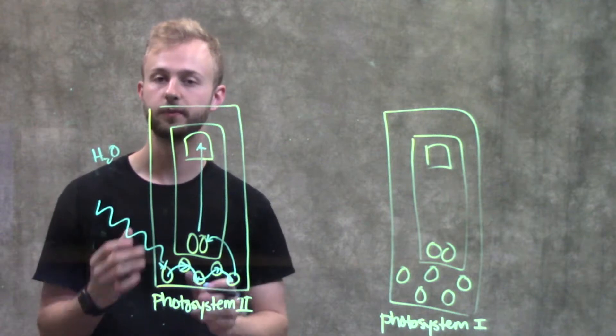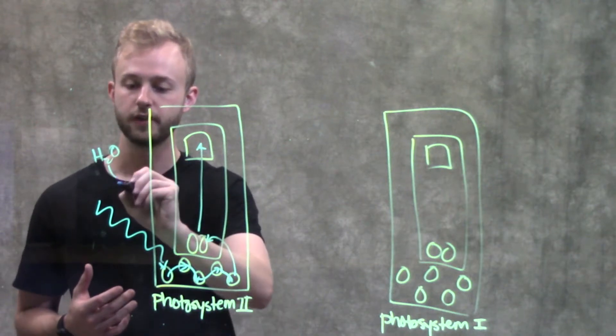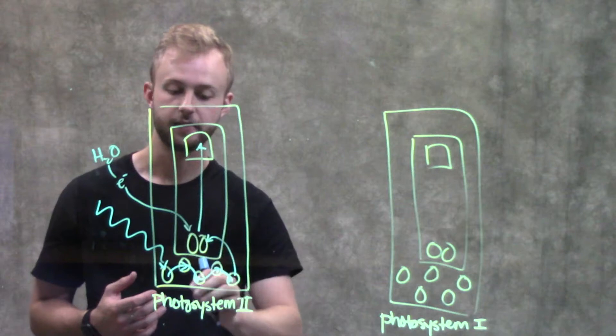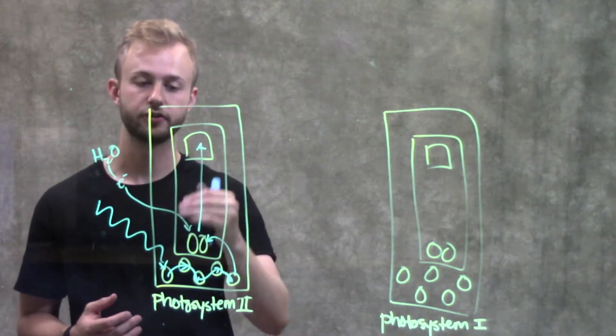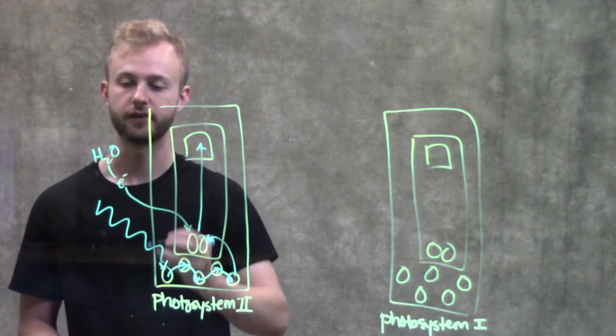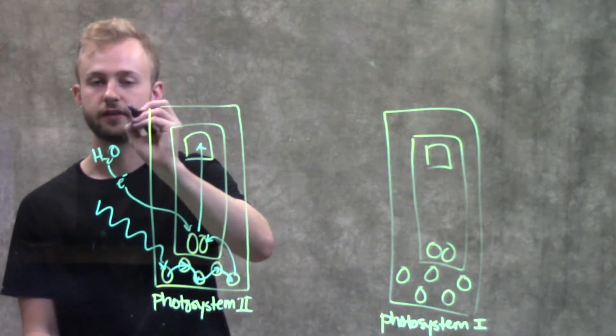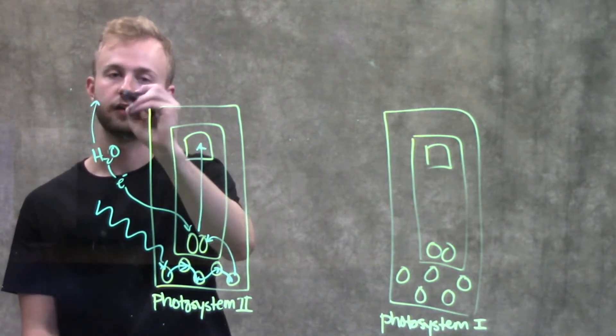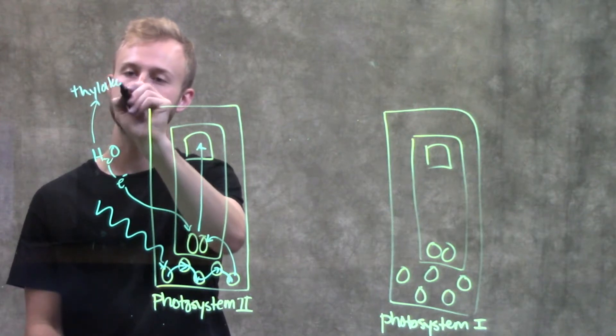Chloroplasts split water, which frees up electrons that can replace the electron lost in the P680 chlorophyll molecules. Additionally, this frees up protons that are pumped into the thylakoid space.